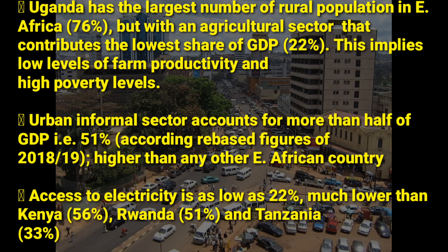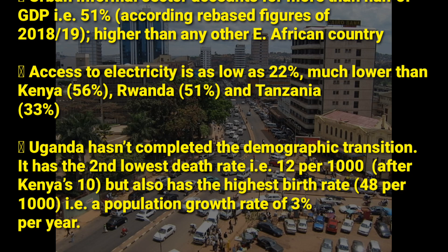Rwanda's electricity access is 51% and Tanzania's is 33%, so only a few places — especially in rural areas — have electricity. Uganda covers only 22% of the whole country. Another point is that Uganda hasn't completed the demographic transition; it still has the second lowest death rate in East Africa at 12 per 1,000.